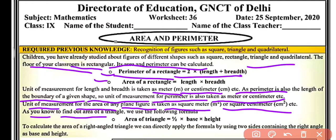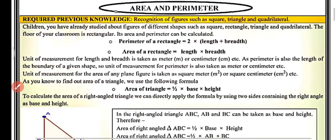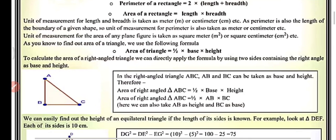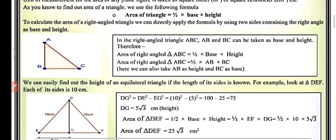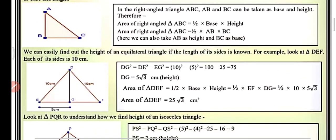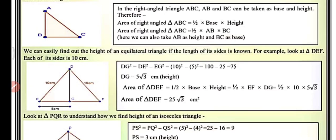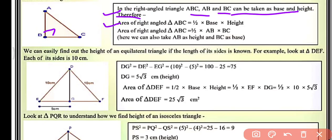To find out the area of a triangle, we use the formula: area of triangle equals half into base into height. To calculate the area of a right angle triangle, we can directly apply this formula using the two sides containing the right angle as base and height. In right angle triangle ABC with right angle at B, sides AB and BC can be taken as base and height, so area equals 1/2 into AB into BC.